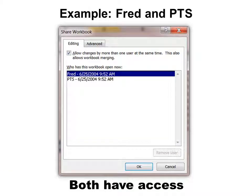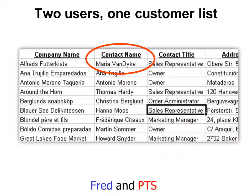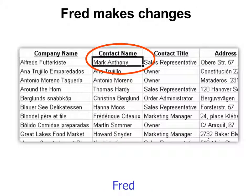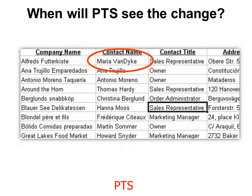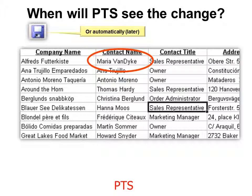Now Fred and PTS both have the document open — two users, one customer list. Fred makes a change: he changes the contact name. When will PTS see the change? When they hit save. When they hit save it automatically refreshes. You can also choose to update based on time instead of the save button.